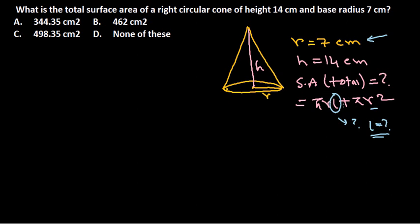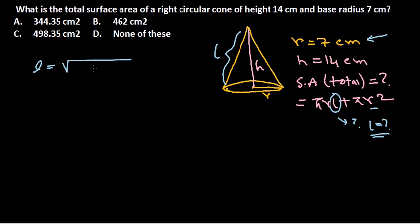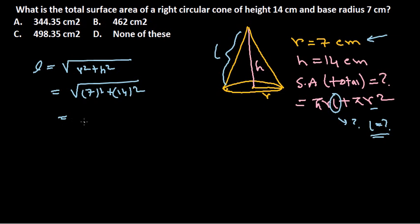To find l — this slant distance along the side — we use the formula: l = √(r² + h²). So r² is 7² = 49, and h² is 14² = 196. Inside the square root we get 245, which simplifies to 7√5 centimeters. That is our slant height l.